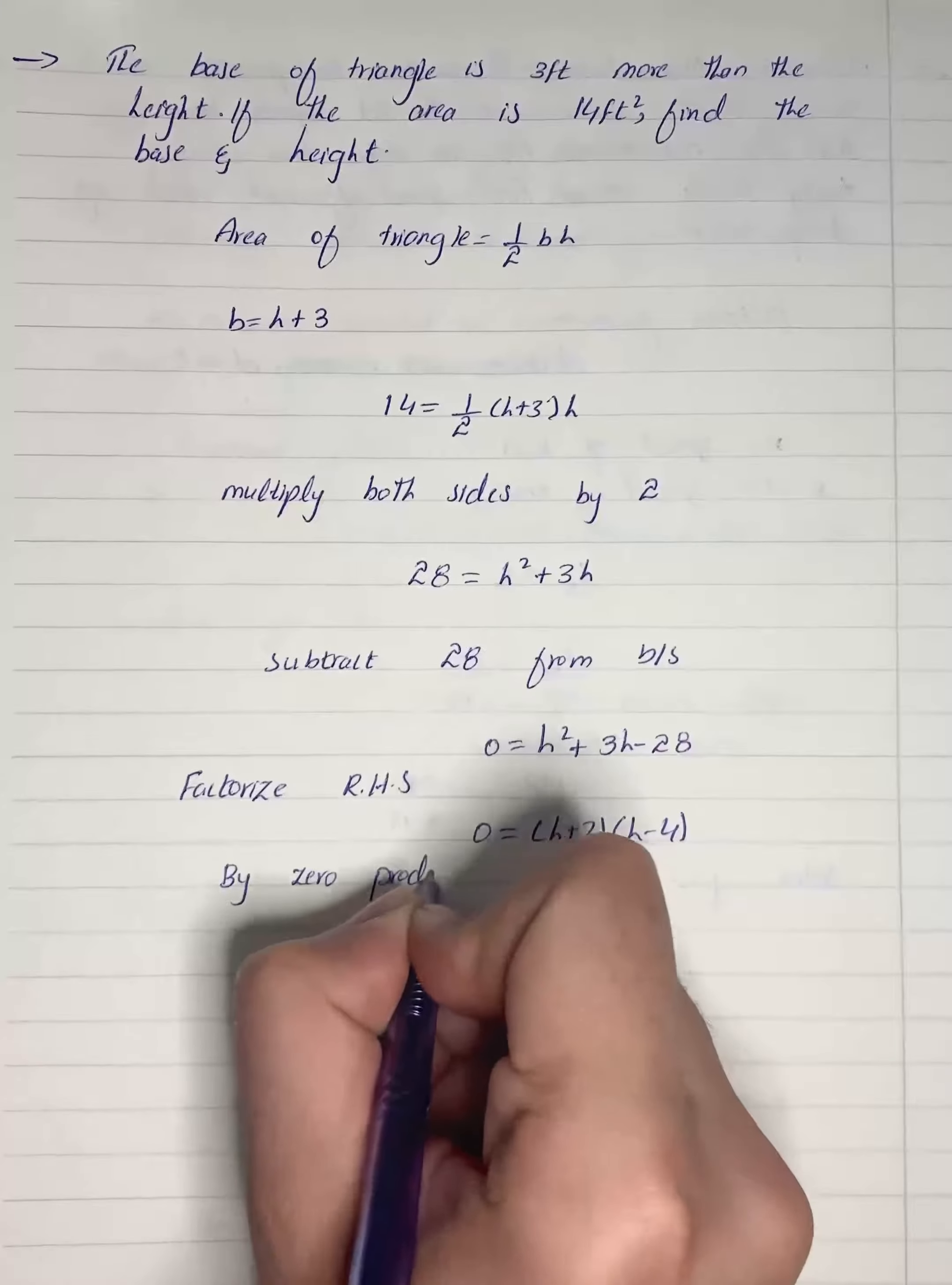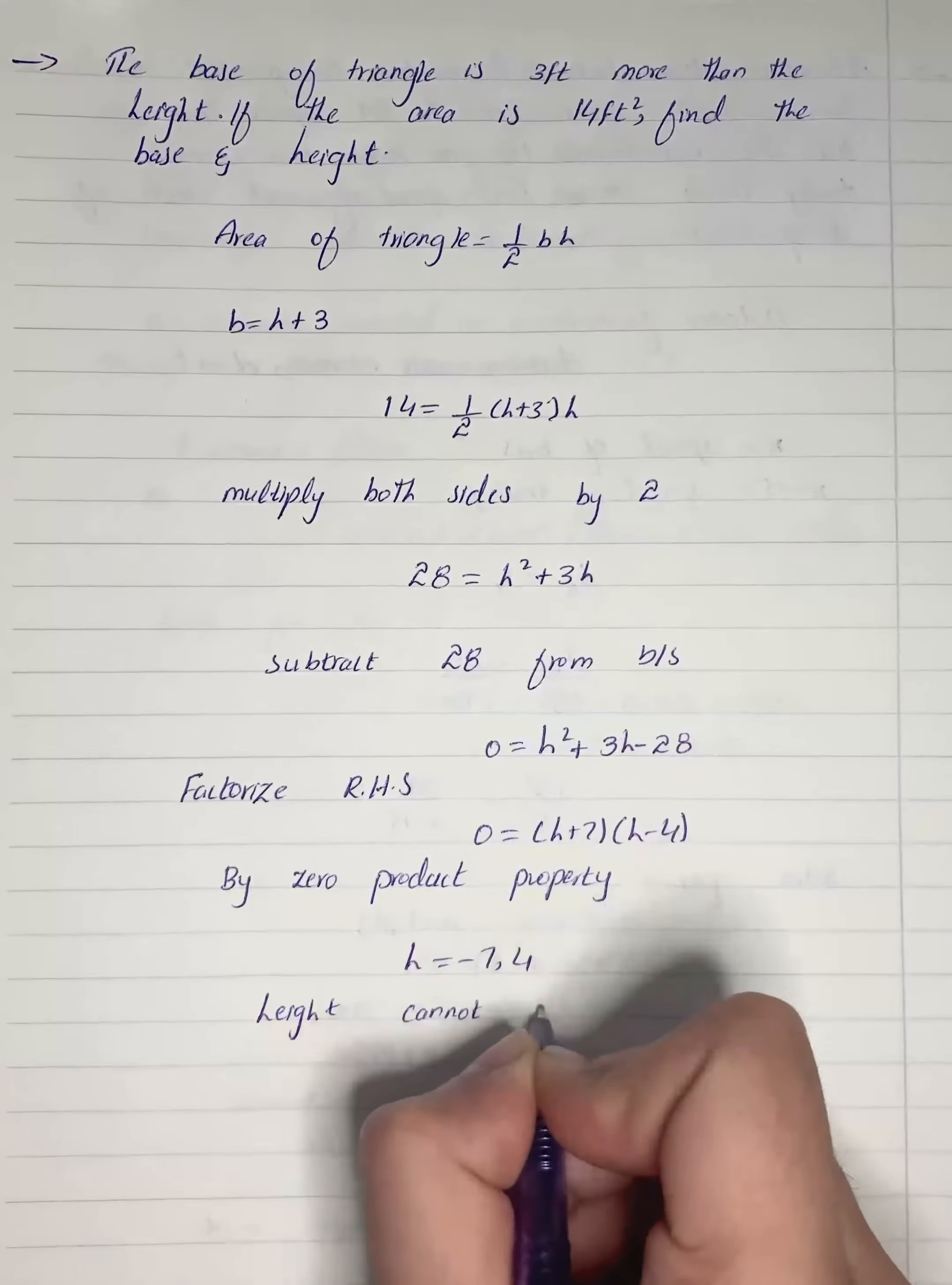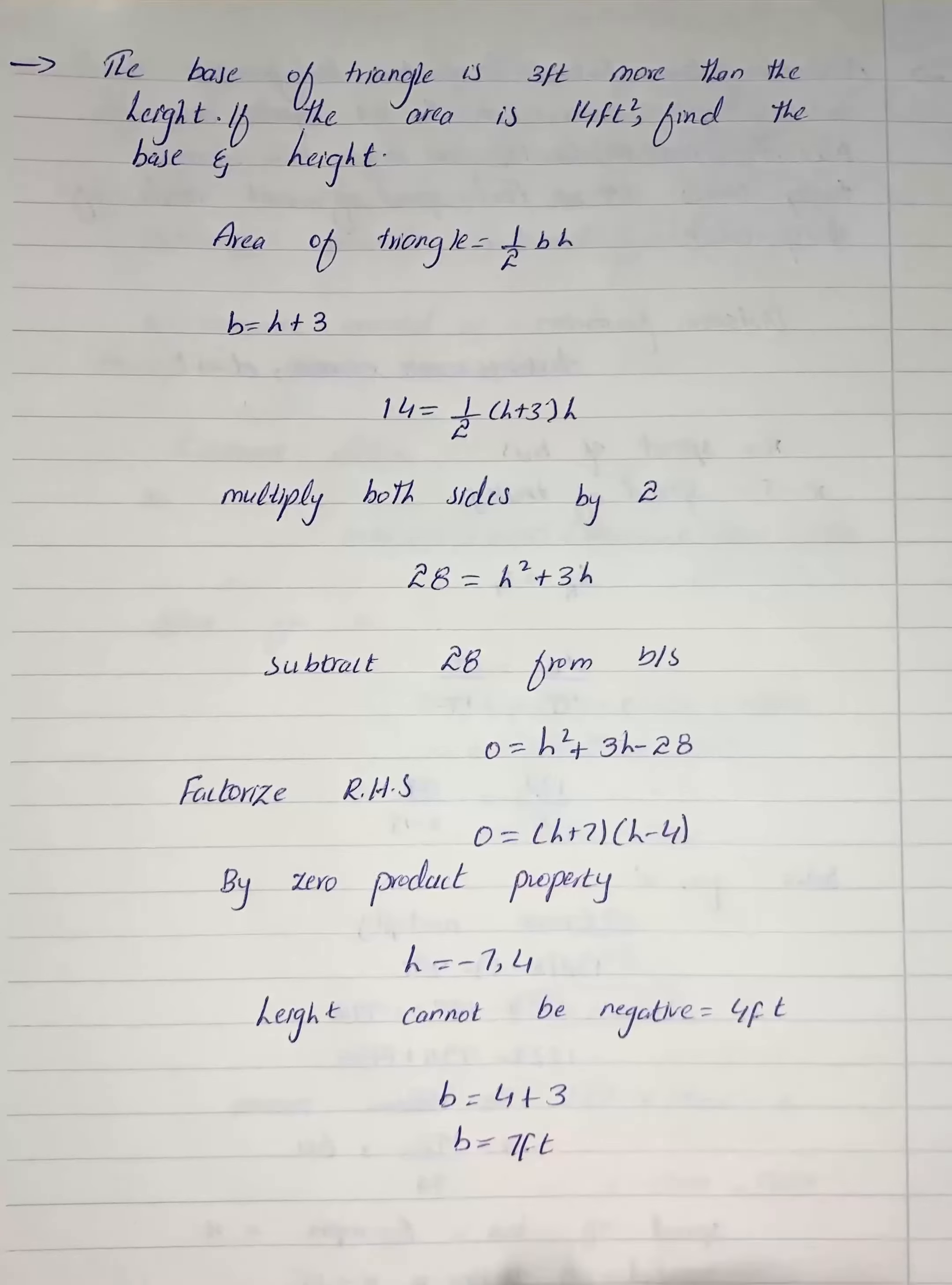So h equals to minus 7 and 4. So we can say that height cannot be negative, so it is 4 feet. So base is equal to, base will be 7 feet.